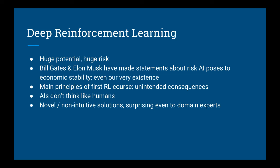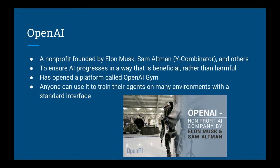As we learned in my first reinforcement learning course, one of the main principles of training reinforcement learning agents is that there are unintended consequences when training an AI. AIs don't think like humans, and so they come up with novel and non-intuitive solutions to reach their goals, often in ways that surprise domain experts — humans who are the best at what they do. OpenAI is a non-profit founded by Elon Musk, Sam Altman, and others in order to ensure that AI progresses in a way that is beneficial rather than harmful.